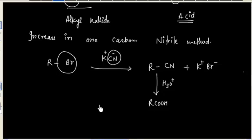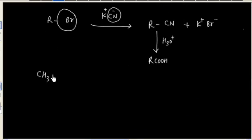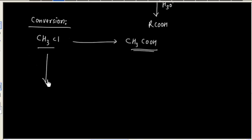Whenever you have one more carbon, you can use the nitrile method. For example, if I have to prepare acetic acid using methyl chloride, the reaction is the same. First you treat with NaCN, you will get alkyl nitrile, and then you do hydrolysis.